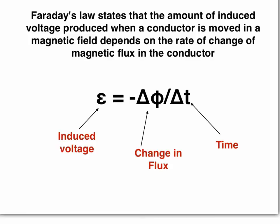So if the flux changes really quickly, you get lots of voltage. If the flux changes slower, you get less voltage. The negative sign is to do with Lenz's law, which is on the next slide.